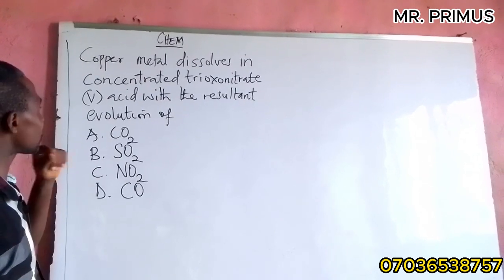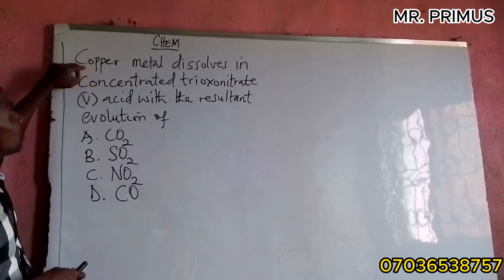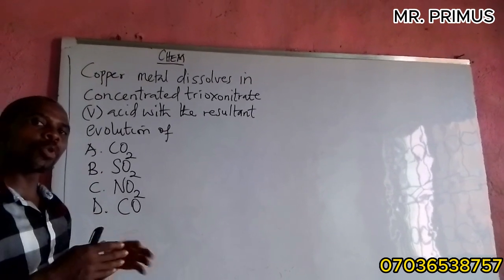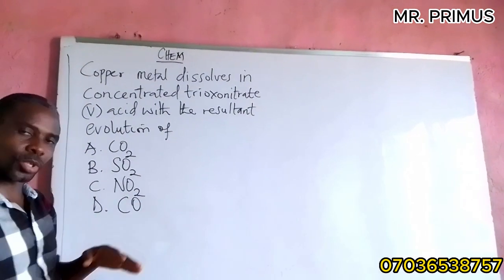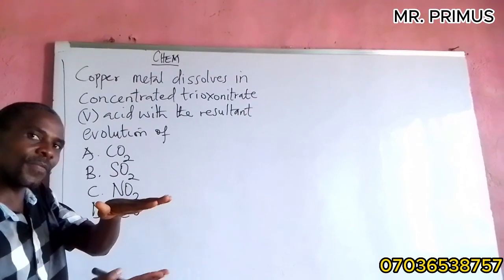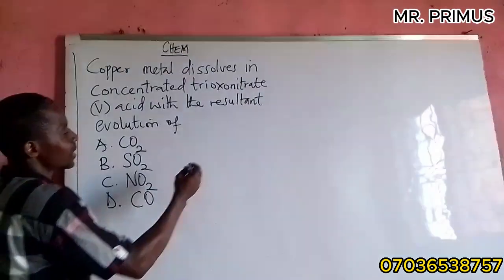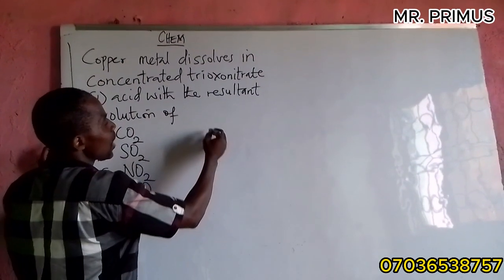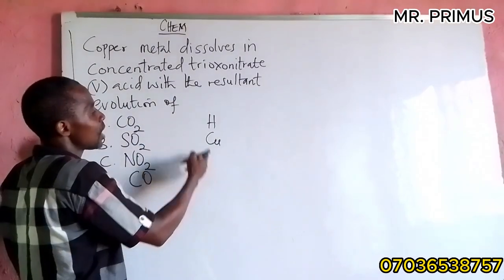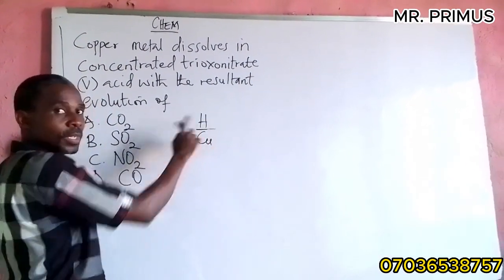So let's look at the answer to this question. First of all, copper is less electropositive than hydrogen. Therefore, it is below hydrogen in the electrochemical series. So if you know hydrogen and copper like this in the electrochemical series, which means copper cannot displace hydrogen.